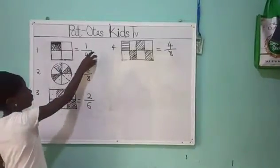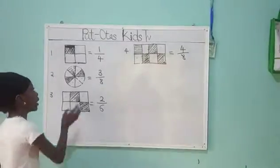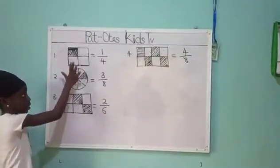At number 1 here, I have 1 over 4 and a square. First of all, we are going to count the parts in this square.